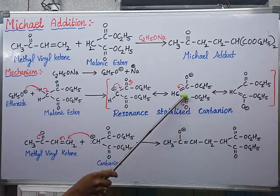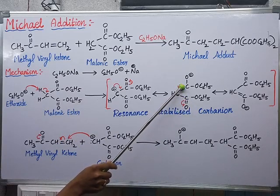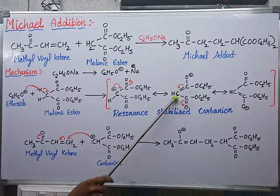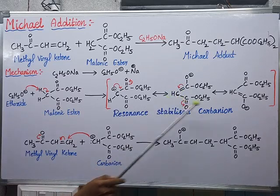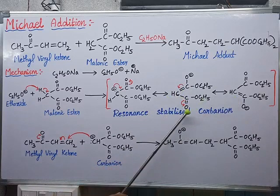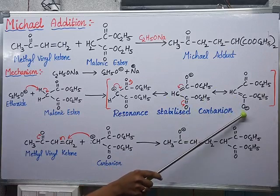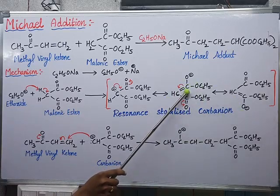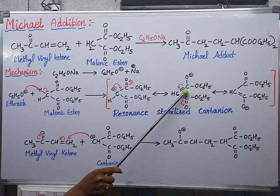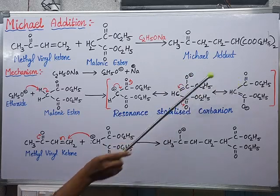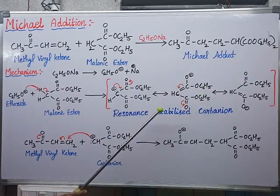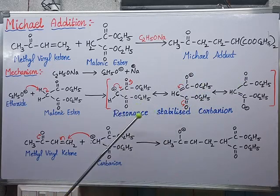For the second resonating structure, I am shifting the other pi bond downward — oxygen gets a negative charge, carbon gets a positive charge. Shifting this bond towards the other carbon gives it a negative charge, and the adjacent carbon becomes positive. The negatively and positively charged carbons form a double bond, completing resonance stabilization of the carbanion intermediate.